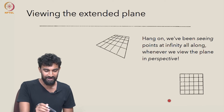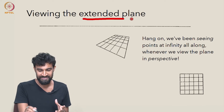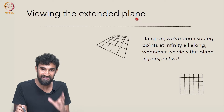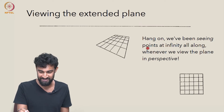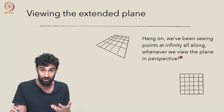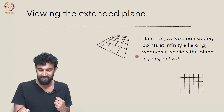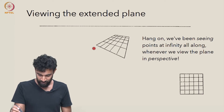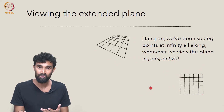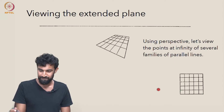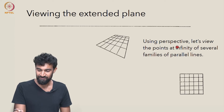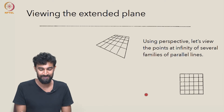I want to talk a little bit about how we can view the extended plane. One thing that immediately jumps into the picture is that we've actually been seeing points at infinity all along. Whenever we view this plane R2 in perspective, we've already been looking at points at infinity — so clearly we can visualize it to some extent, and we do that using perspective. Let's view the points at infinity of several families of parallel lines.